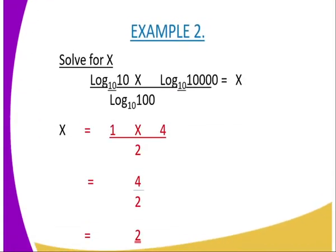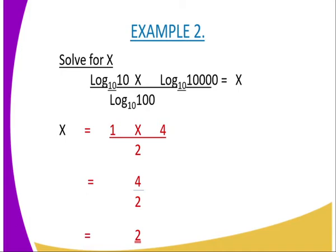In Example 2, you are supposed to solve for x: log 10 to base 10 multiplied by log 10,000 to base 10, then divide everything by log 100 to base 10. By applying the common logarithm, the first part is 1 and the second part of the numerator is 4, and you divide by 2, because the log of 100 to base 10 is 2. So 1 multiplied by 4 is 4, then 4 divided by 2 gives the answer as 2.